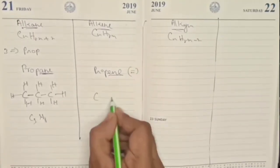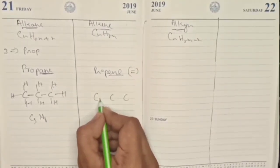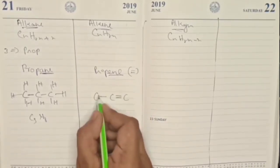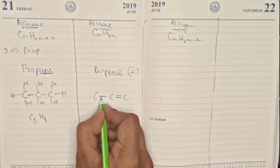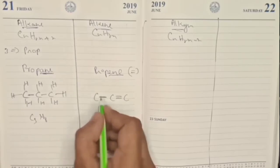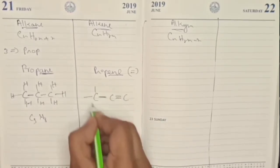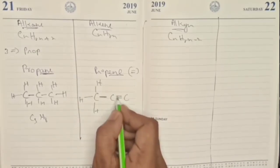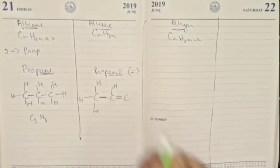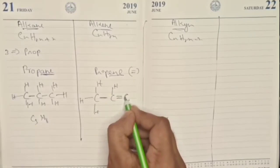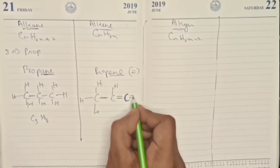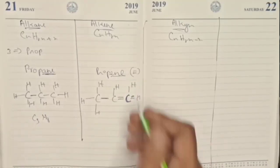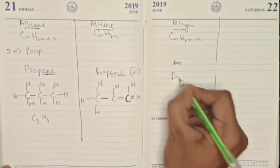Now let's talk about propene — prop- means three carbons, and -ene means a double bond. The double bond is placed at the beginning or end of the chain. The first carbon already has one bond with the chain and three bonds with hydrogen. The middle carbon has three bonds (including the double bond) and one bond with hydrogen. The last carbon has two bonds already and shares remaining bonds with hydrogen. Propene is C3H6.